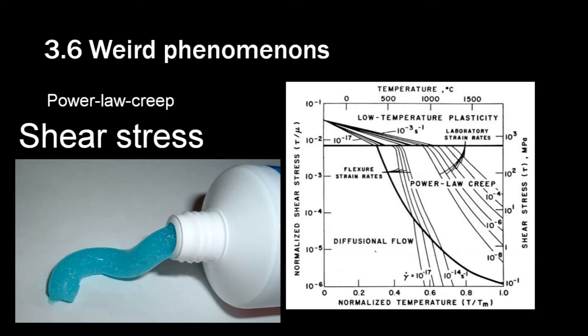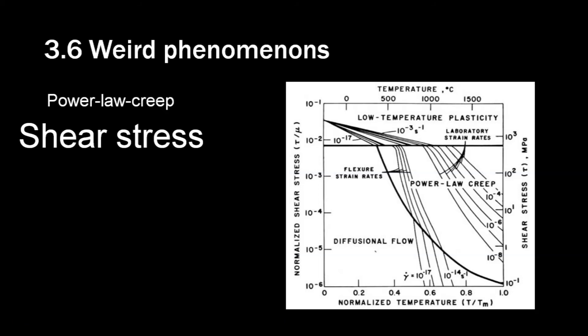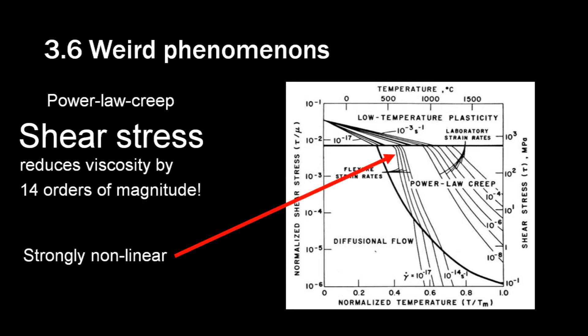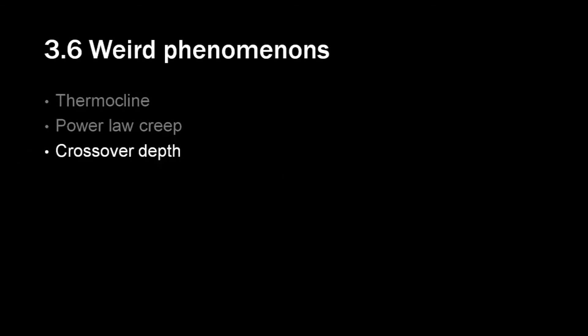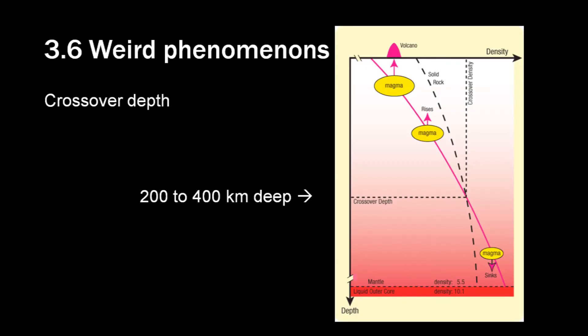You can compare this with toothpaste. Toothpaste is solid until you put pressure on it, then it changes shape, but it will become solid again as soon as the pressure stops. This process reduces the viscosity of the rock up to 14 orders of magnitude, and thus it is very strongly non-linear. In very extreme conditions, solid rock can flow like water, without increase in temperature. This phenomenon plays a very big role in John Baumgartner's catastrophic plate tectonics model. The last weird phenomenon I am going to show you is the crossover depth. We are used to magma rising up, because molten material has a lower density than the same material in solid state. But it appears that molten rock is better compressible than solid rock.